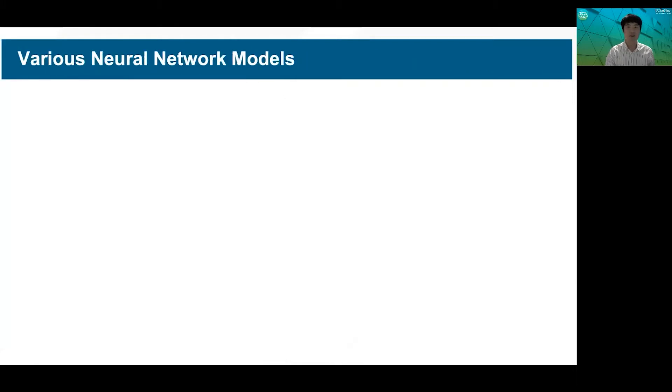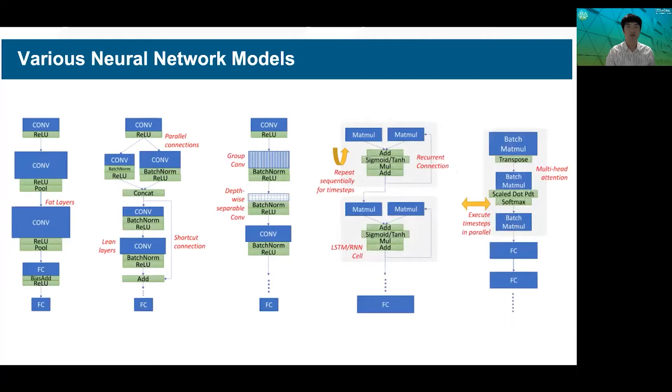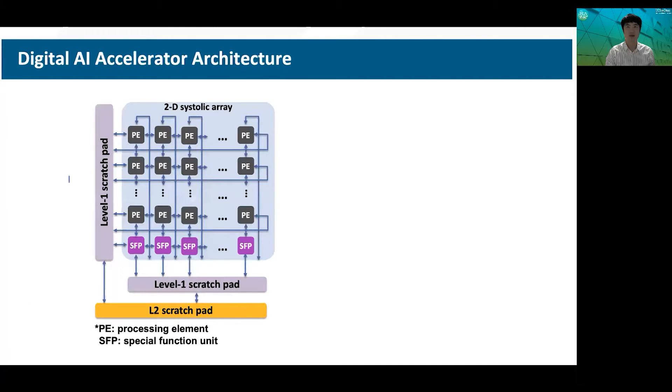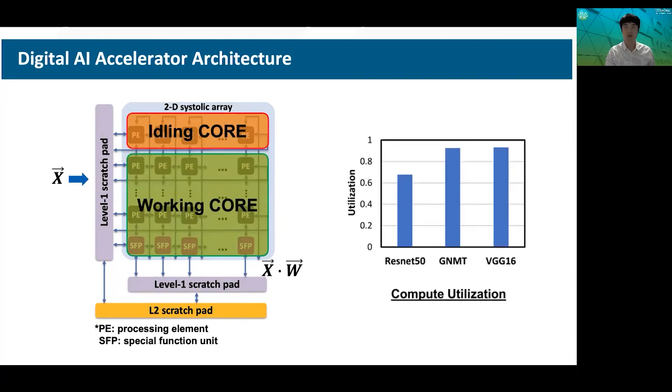As you have heard, so many different types of deep neural network models have been recently introduced. We aim to design highly flexible and programmable architecture to support the wide variety of network models with high efficiency. We are also pursuing to achieve consistently high core utilization factor across various deep neural network models.